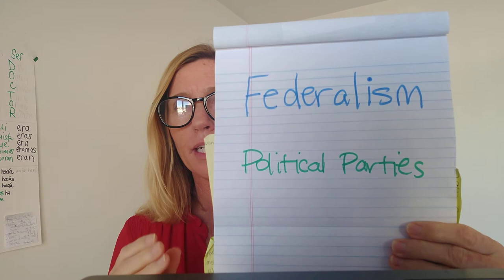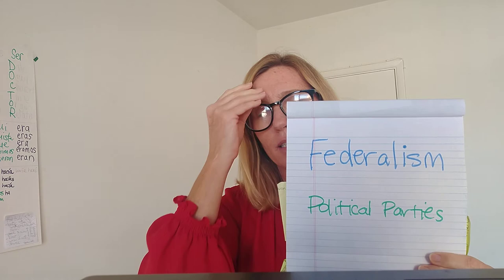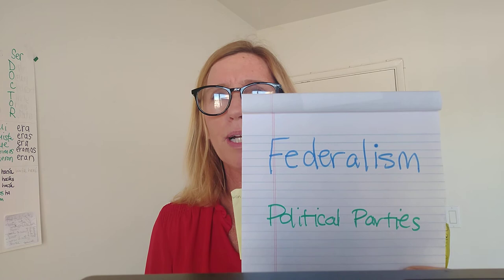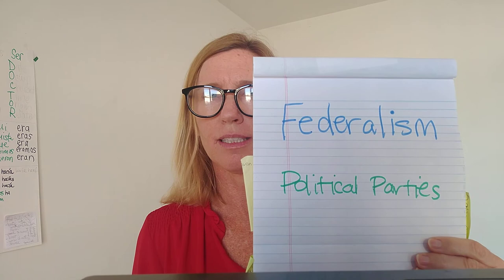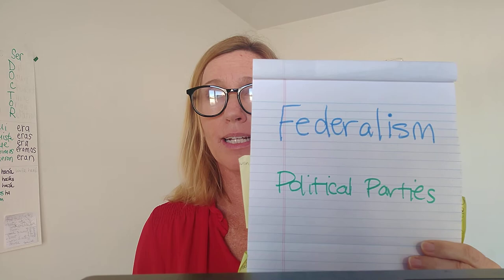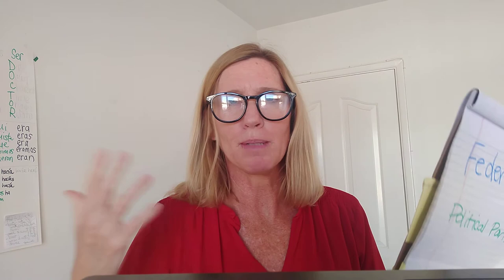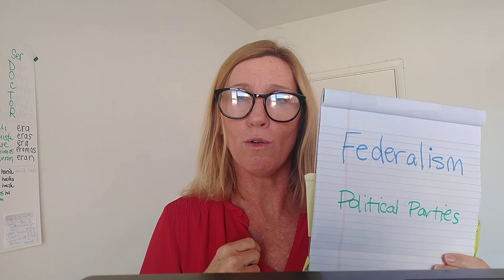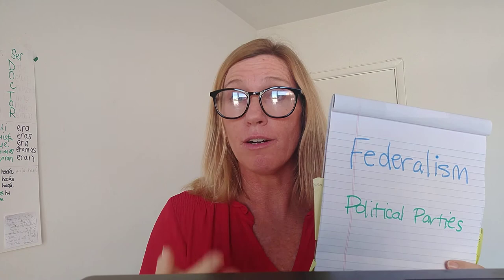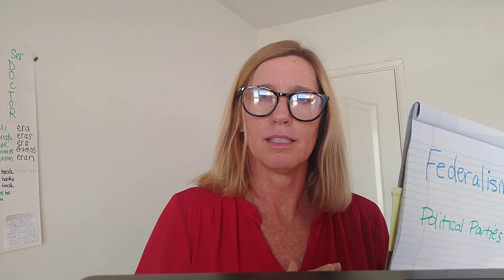So today we've learned two concepts: federalism and political parties. Political parties — these are not like parties we go to, like a birthday party or a family party. In each state we have political parties, and they select who we're going to vote for for our president, our governor, and different lawmakers like Congress and the state legislature.